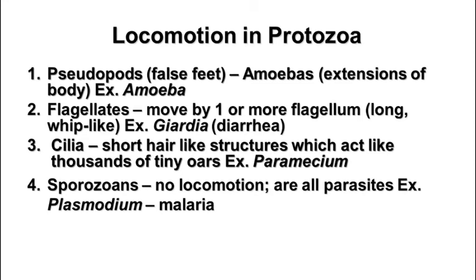The second group is the flagellates. They move by means of one or more flagella. A flagellum is a long whip-like structure, somewhat like the one seen in bacteria, but these are more complex and a lot bigger. Flagella are made of an arrangement of microtubules and move in a spiral fashion to act more like a propeller. An example of a flagellate is giardia, which you can get from drinking unpurified stream water, and it causes a diarrhea-type illness.